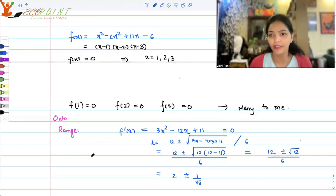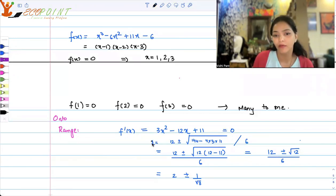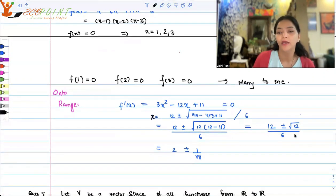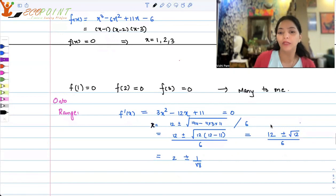Well, if we put f'(x) equals to 0, what we will be getting is 3x square minus 12x plus 11 equals to 0. And try to find out the roots. When you try to find out the roots, you will get that the roots are 2 plus minus 1 upon root 3. This is the working that you will find out. And this means these are the two values where f'(x) is actually equal to 0.